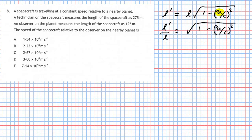Whenever you see a square root on either side of an equation, you can eliminate it by squaring both sides. So (l-prime / l) squared equals one minus (u/c) squared. The square root sign is now gone, but we're still looking to extract the speed u.